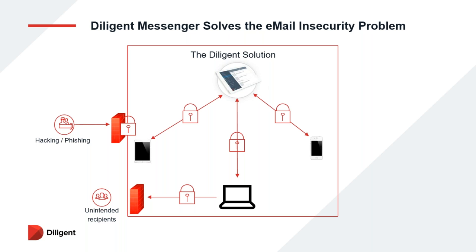We as a company are an ISO 27001 certified organization — that is the gold standard for information security. Messages can be retracted. I mentioned before the situation where we shoot out an email to somebody and realize it's gone to the wrong person. The idea of Messenger is that you have that end-to-end control. The author of the message is able to retract the message and any attachment they sent at any point, with a simple swipe that provides them with an undo function.